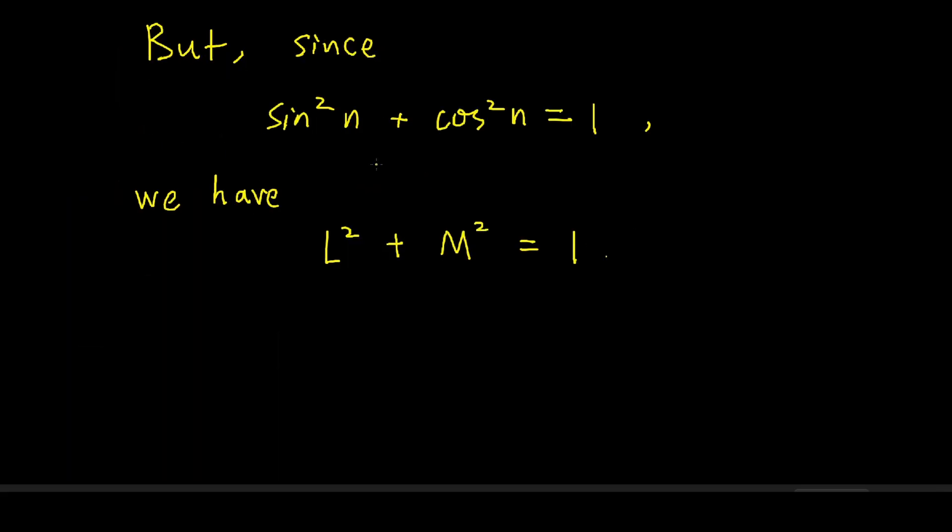On the other hand, since sine squared of n plus cosine squared of n is equal to 1, by taking the limit n goes to infinity on both sides, we get L squared plus M squared equals 1. But as we shown earlier, L and M must be both 0, so we have 0 equals 1, which is of course a contradiction.